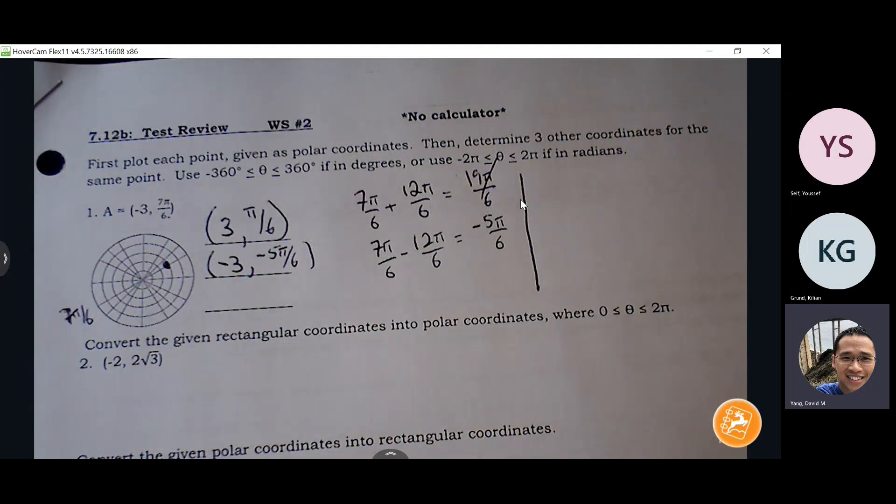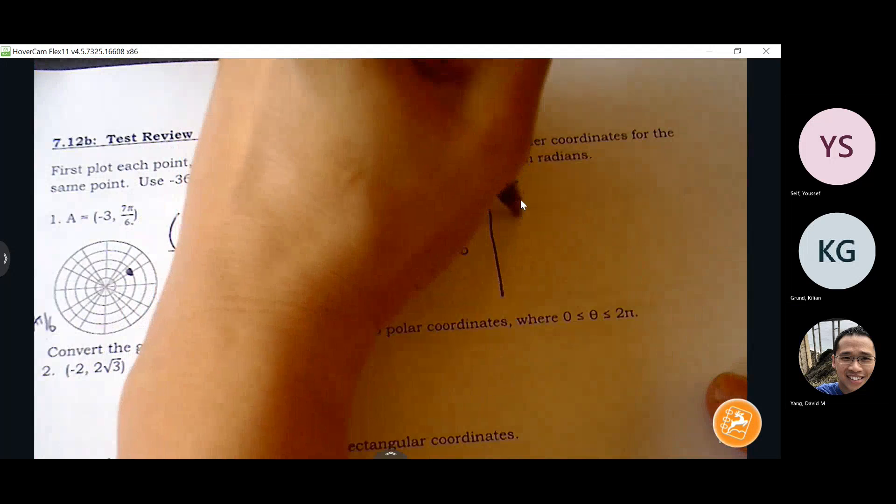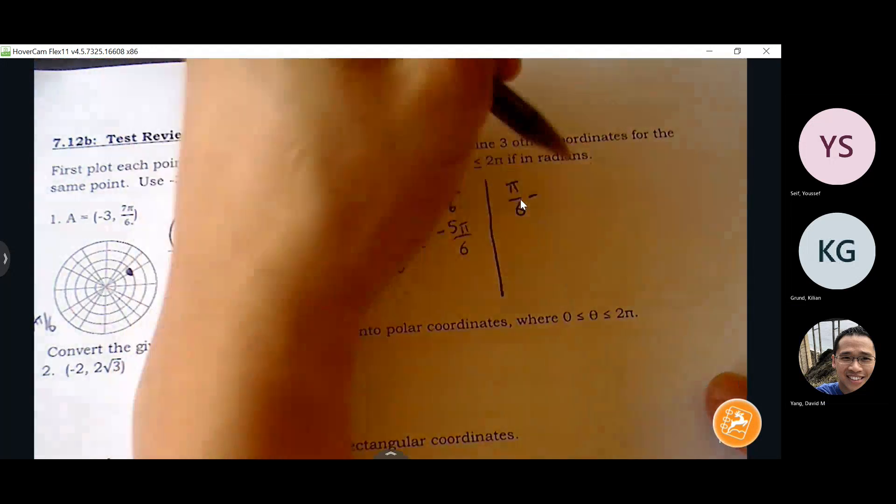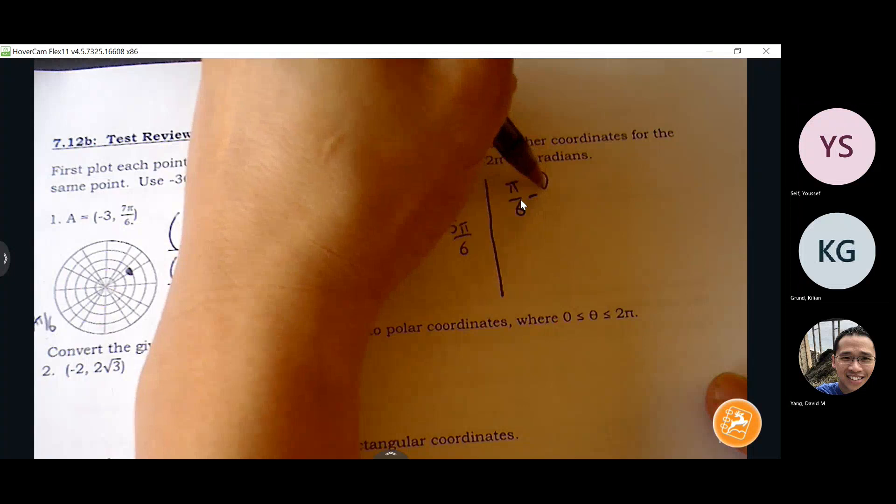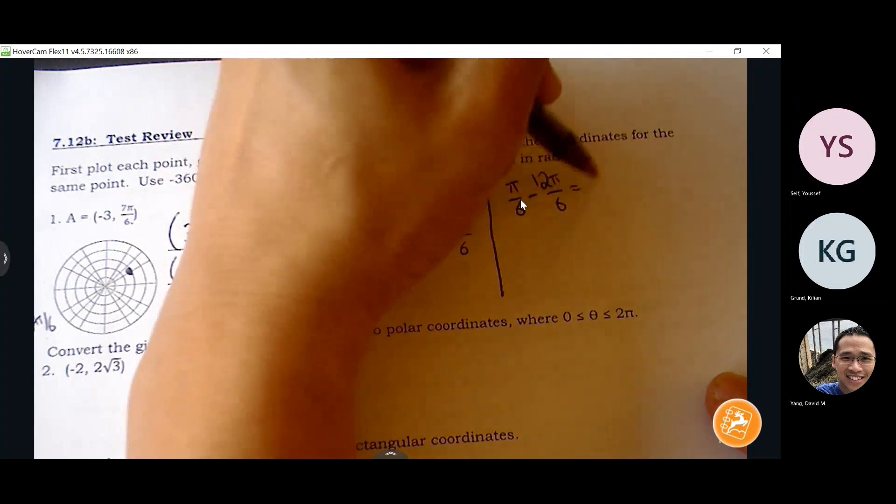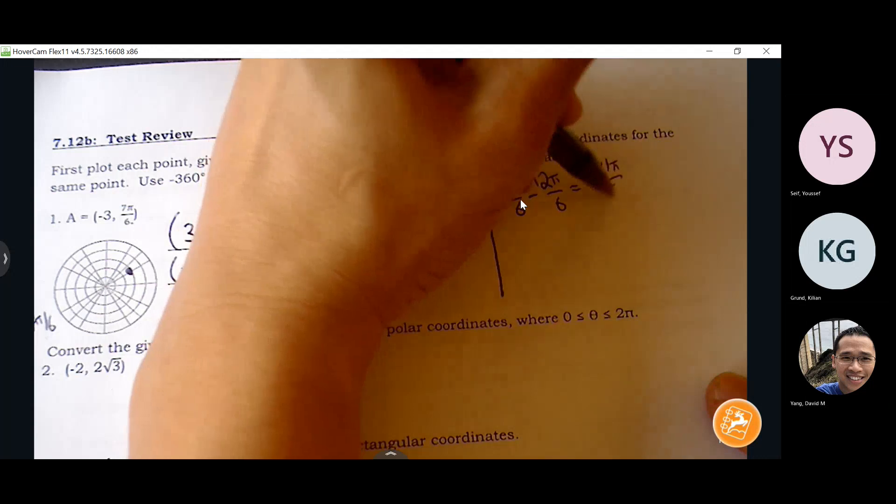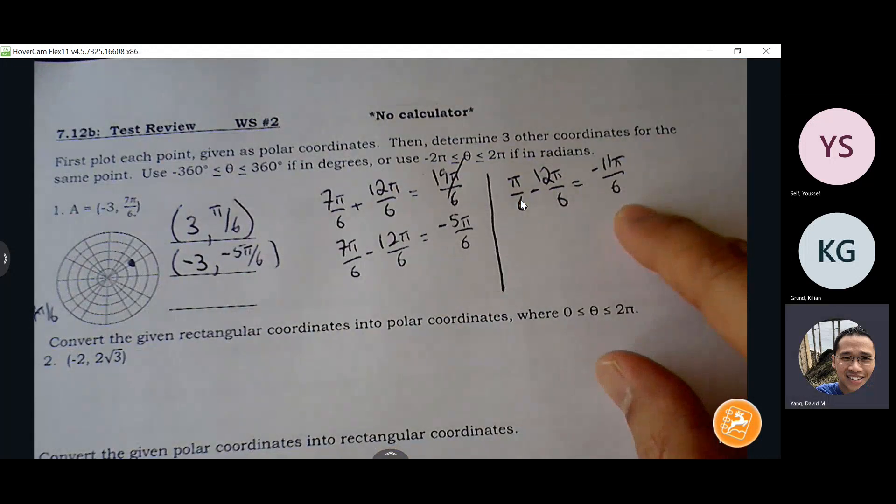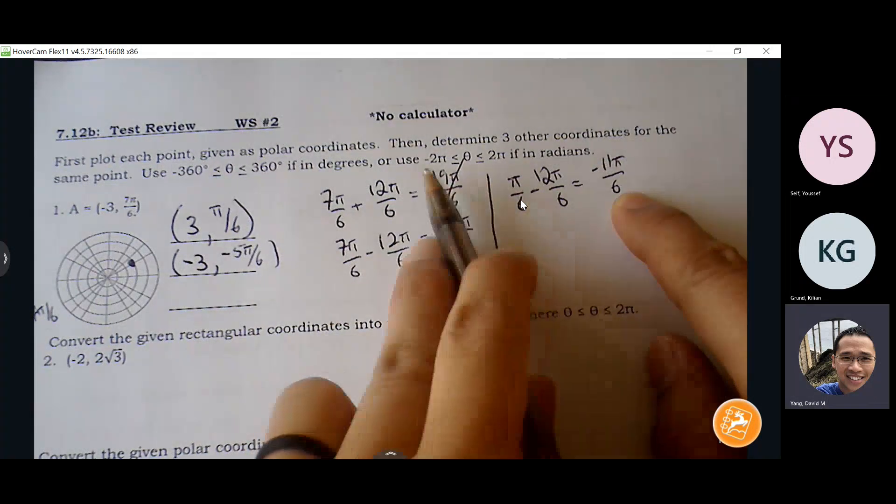We don't need another third quadrant anymore. We could subtract two pi. Okay. Which is negative 11 pi over six, which does fall inside the interval.